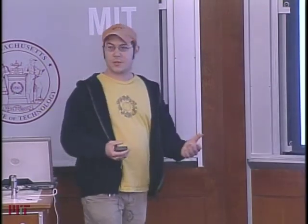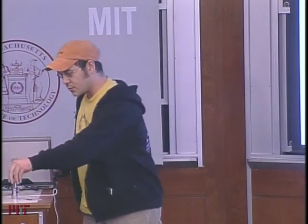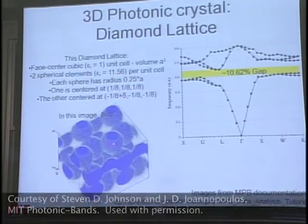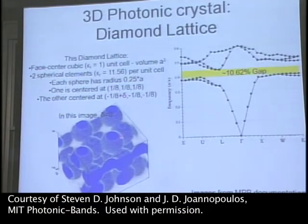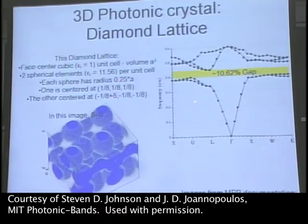One of the structures Martin mentioned was the diamond lattice, which is the same as the face-centered cubic but with two atoms in the middle. This image was taken from MIT Photonic Bands, a program that calculates the band gap in three-dimensional structures. For this particular structure, the band gap is 10.62%, defined as the range of frequencies divided by the mid-frequency. The band gap is centered about 0.42.